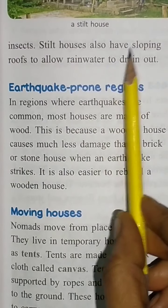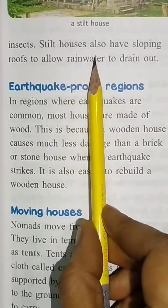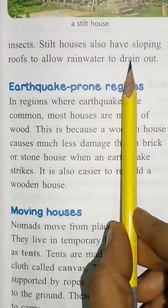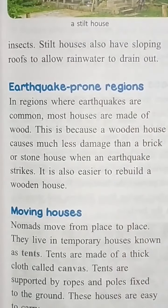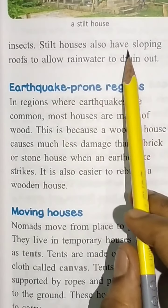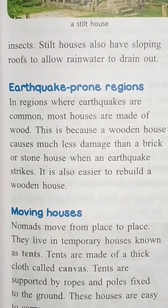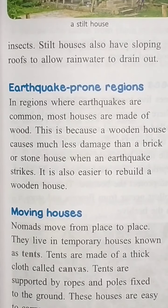Stilt houses also have sloping roofs to allow rain water to drain out. Stilt houses jo hote hain, unke upar ke jo chhat hote hain, woh sloping mein hote hain, taaki barish ka paani aaram se niche gir jaaye aur nale mein chala jaaye.